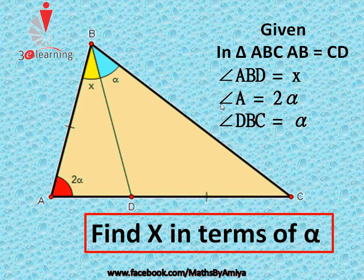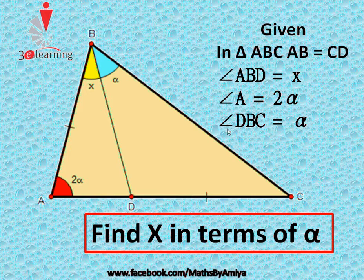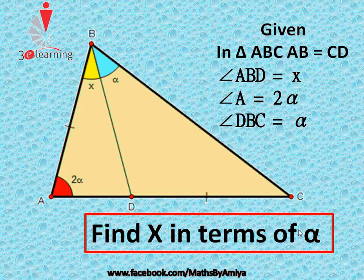Hello, today we have a question of geometry. The data given is: angle ABD is x, angle A is 2α, angle DBC is α, and we have to find the value of x in terms of α.